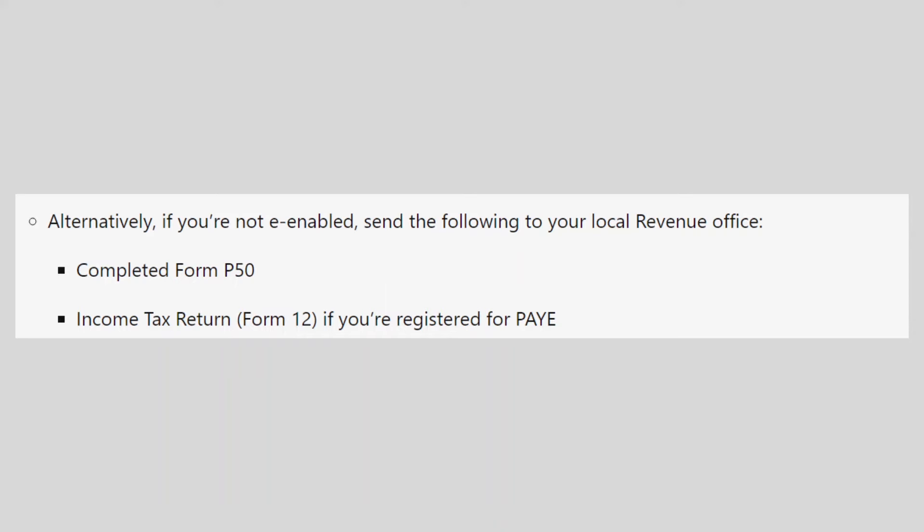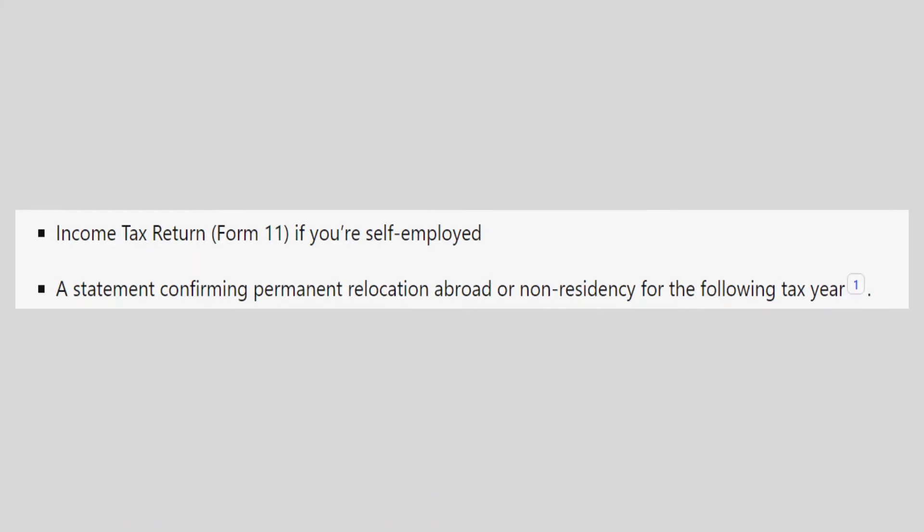Send a completed Form P50, an income tax return Form 12 if you are registered for PAYE, an income tax return Form 11 if you are self-employed, and a statement confirming permanent relocation abroad or non-residency for the following tax year. That is how to apply for a tax refund online in Ireland.